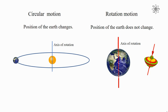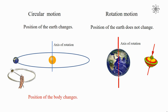This situation can be compared with the motion of a sling, where the stone changes its position during its circular motion. From this, we can say that in circular motion, the body changes its position. But in the case of rotational motion, the position of the body does not change.